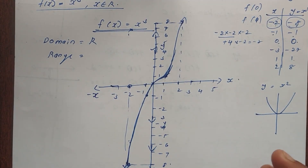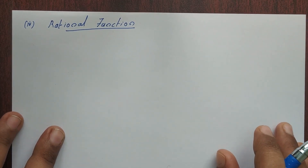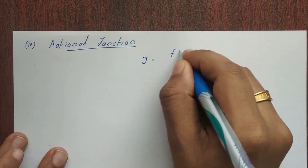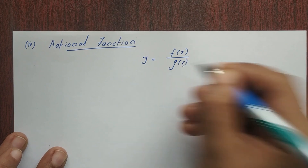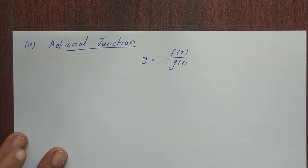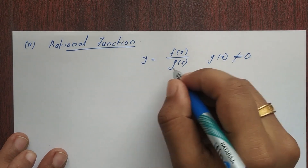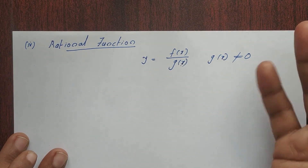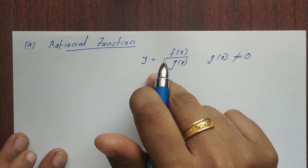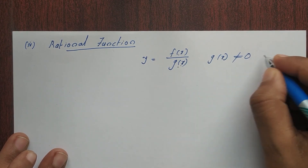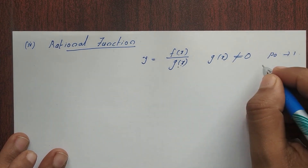So now I am going to start a new type: the rational function. The rational function is defined as y equals f of x divided by g of x. That is numerator over denominator, with the condition that g of x, the denominator, cannot equal zero, because division by zero is not possible. Here f of x and g of x are both polynomials.